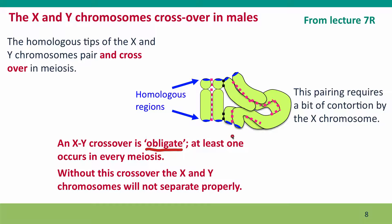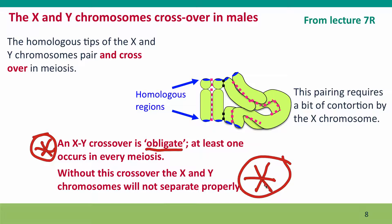When we presented this in Lecture 7R, the emphasis was on the obligate crossover. But now I want to emphasize what happens when there isn't a crossover, because sometimes there isn't one — sometimes the system just doesn't get its act together and there's no crossover between the X and the Y. When that happens, the X and Y do not segregate properly. They drift around, unmoored, and just by chance they may both wind up in the same cell, leaving the other cell with no sex chromosome. That's how male meiotic errors give rise to sex chromosome aneuploidies, and that's why it happens much more frequently in male meiosis than in female meiosis.